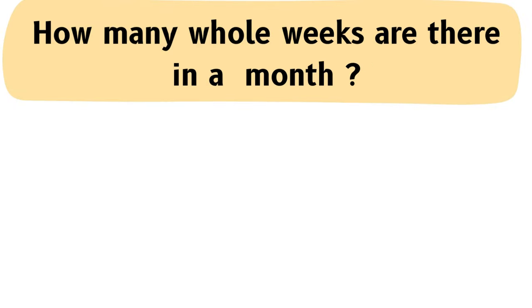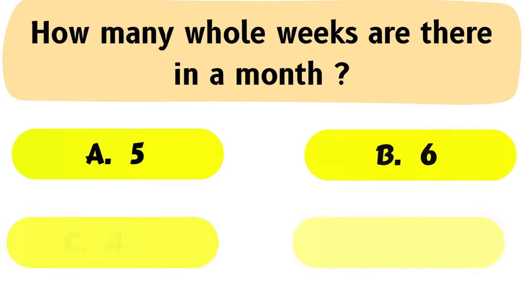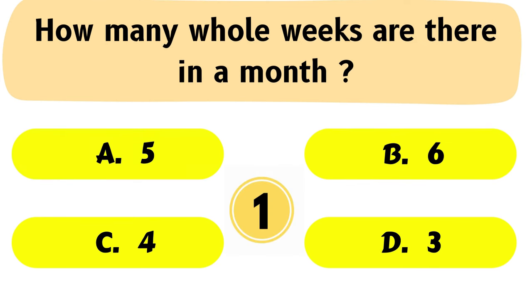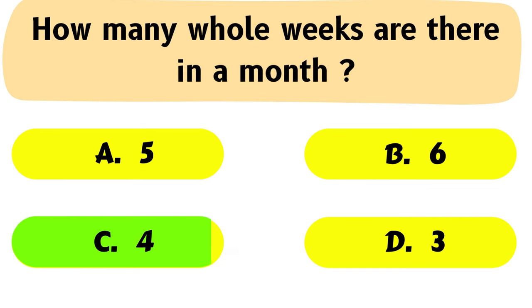Question No. 49: How many whole weeks are there in a month? A. 5, B. 6, C. 4, D. 3. The correct answer is Option C: 4.